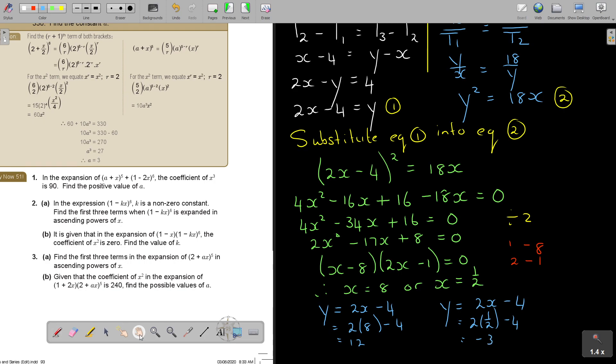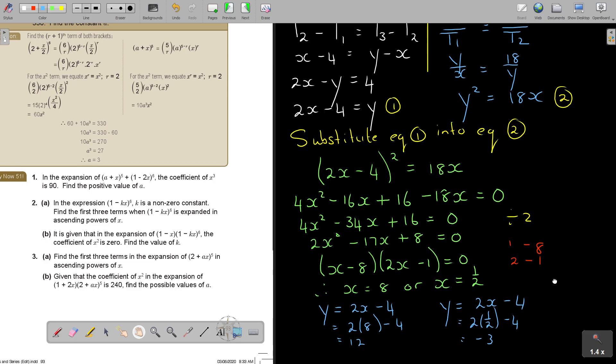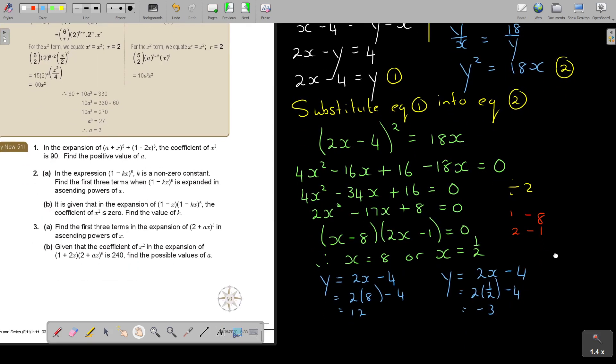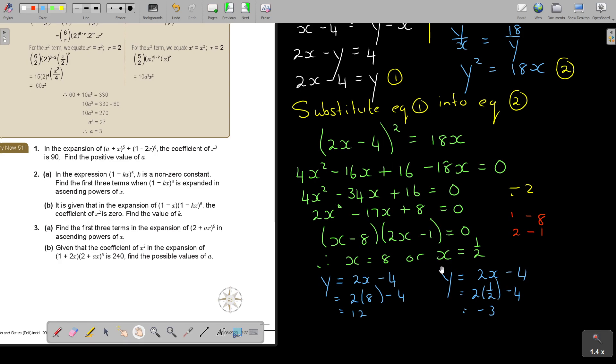So basically, but x must be, x and y must be positive. You see? So here comes the thing. So basically, because y is ending up to a negative value there, I dismiss this. You see? Because both must be positive.